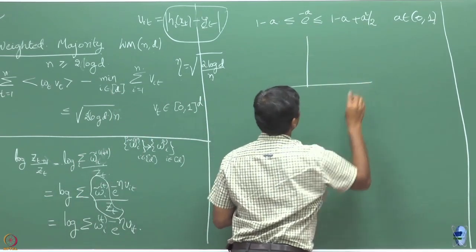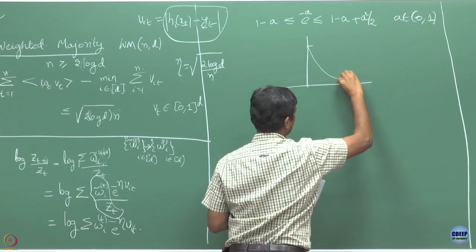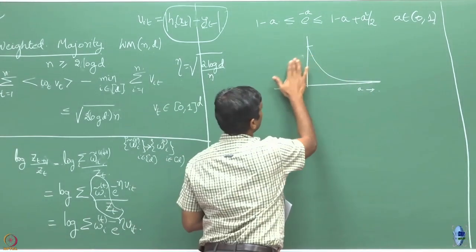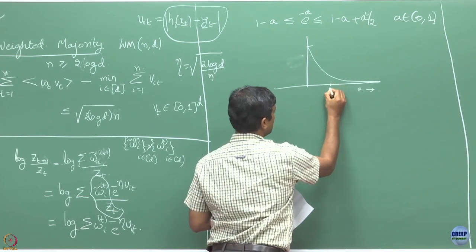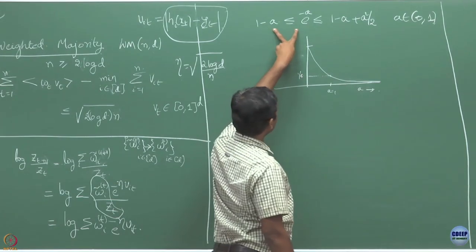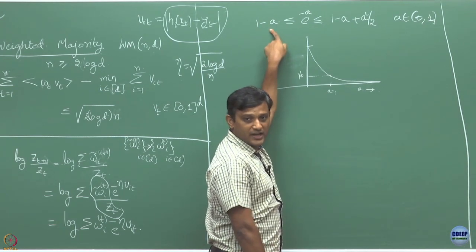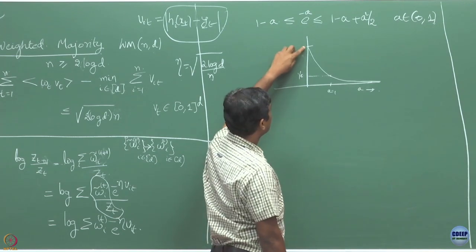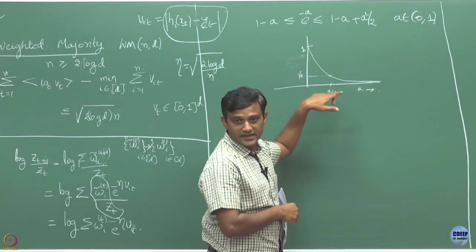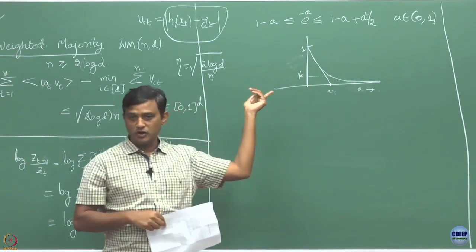The first bound I am going to use is: for a in [0,1], e to the power minus a is bounded above by 1 minus a plus a squared over 2, and also bounded by 1 minus a. Let us see: if you have e to the power minus a, at a equals 1 this quantity is 1 over e. The quantity 1 minus a starts from 1 at a=0 and falls linearly to 0 at a=1, and it is a lower bound on e to the power minus a in [0,1].